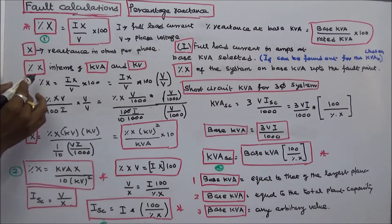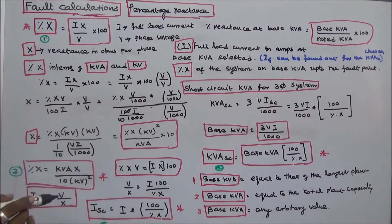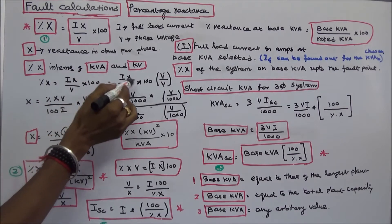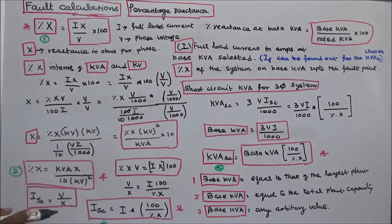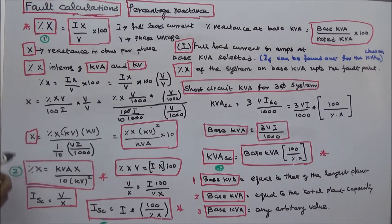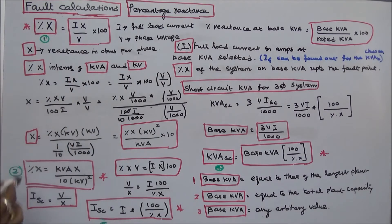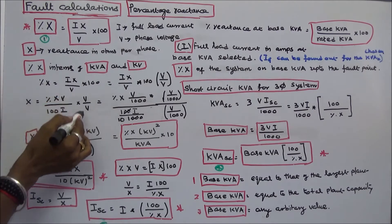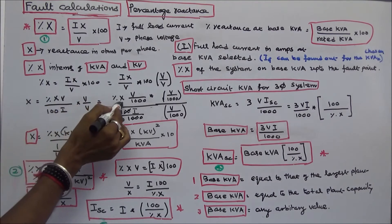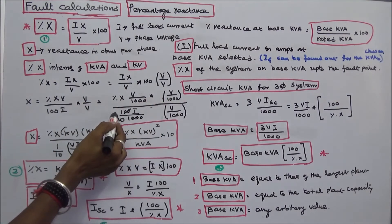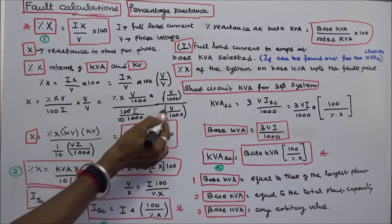Next, we express percentage X in terms of KVA and KV. Percentage X is equal to I times X divided by V, times 100, which equals I times X divided by V times 100, multiplied by V over V. Reactance in ohms per phase X equals percentage X times V divided by 100 times I times V over V, which equals percentage X times (V/1000) times (V/1000) divided by 100 times (I/1000) times (V/1000).